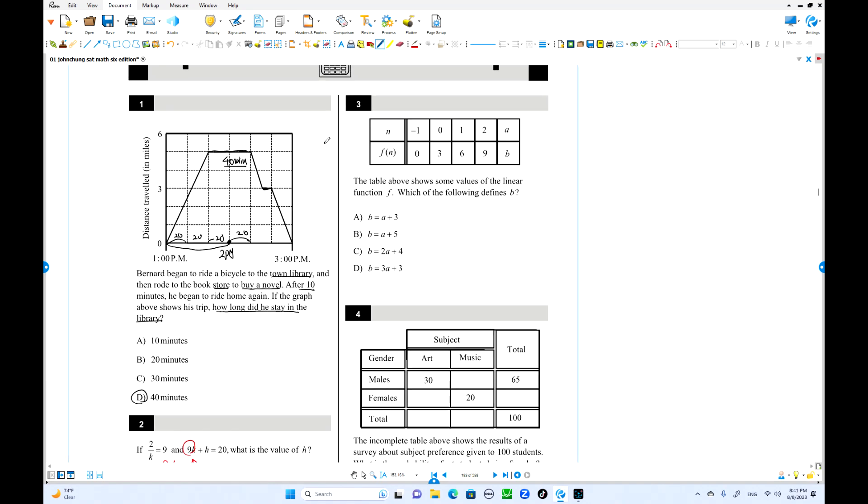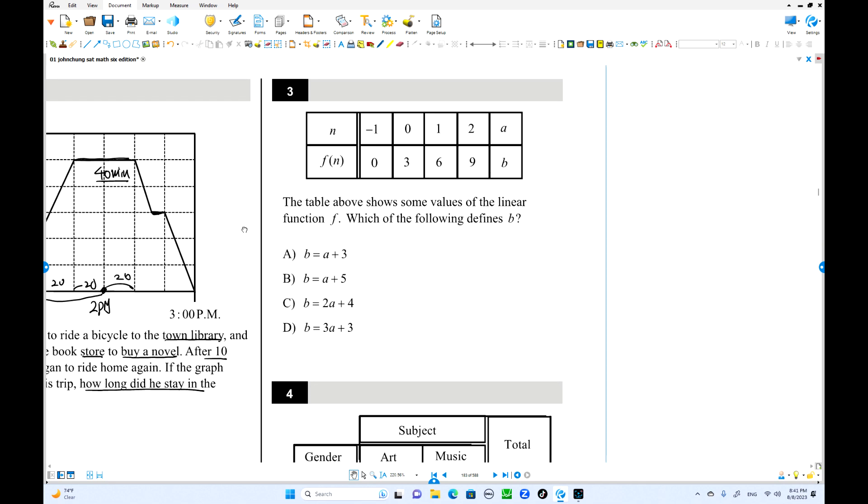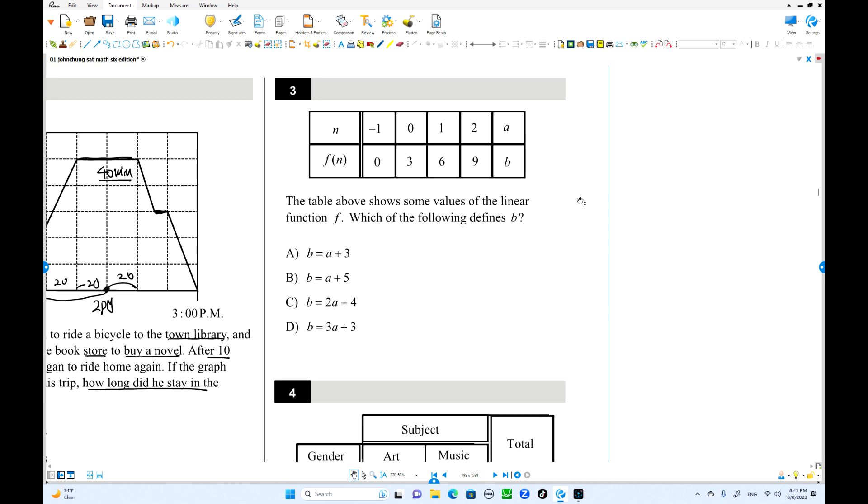Let's move on number 3. The table shows some values of linear function. That is linear, right? So we're going to find the relationship between A and B, or between X and Y, same things. Now first, we're going to find the slope. This is increased by 1. This is increased by 3. Change in Y is 3. Change in X equals 1. 3 over 1 is the slope.